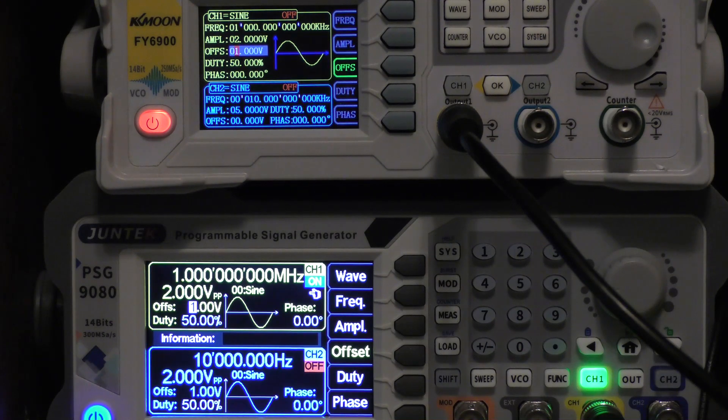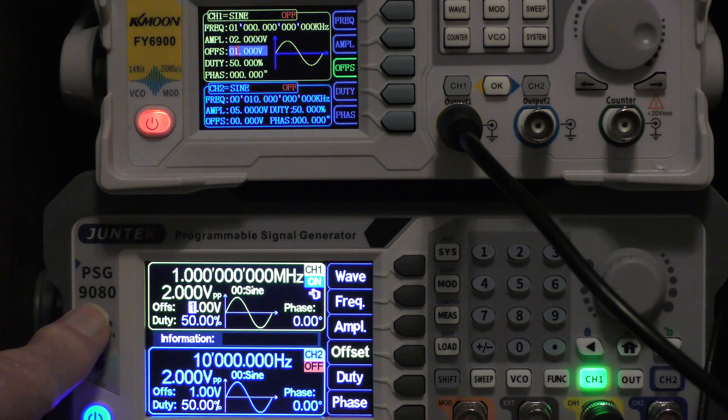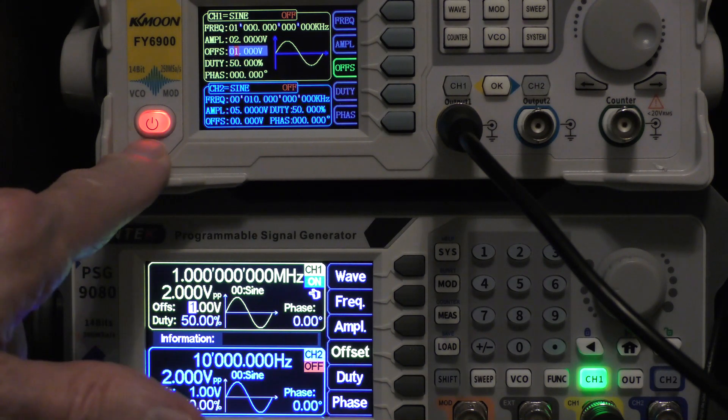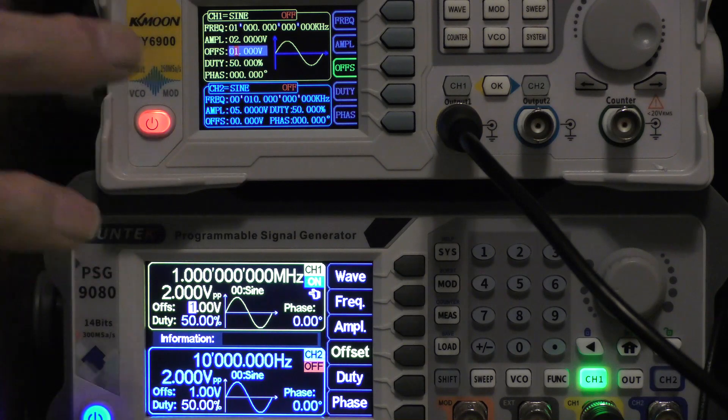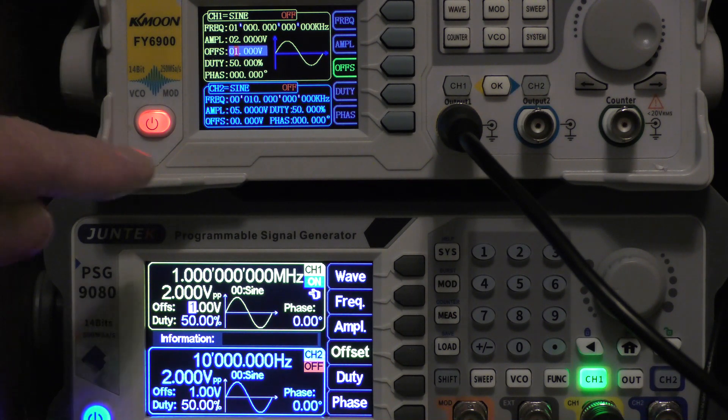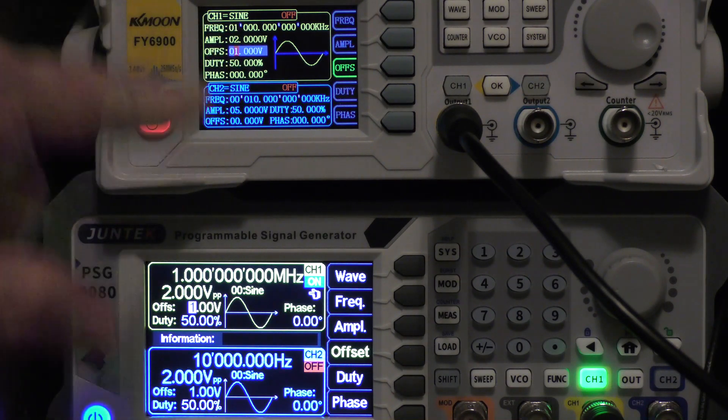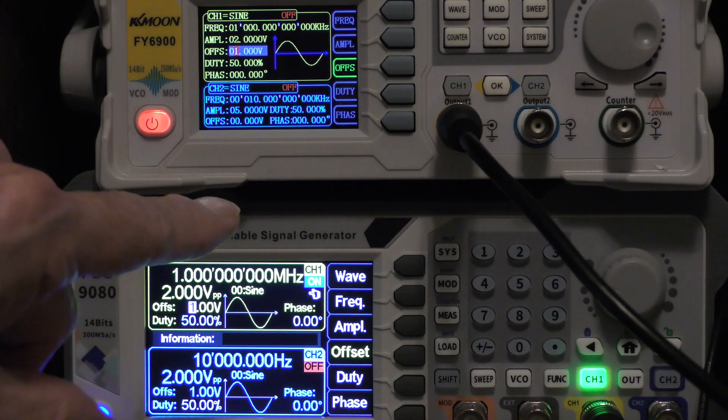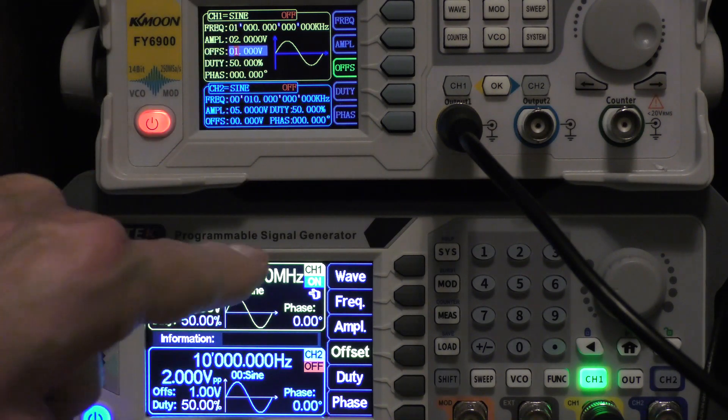A little bit more on these two generators, the Juntech PSG 9080 and the KK Moon FY6900. What I have discovered is that both generators only hold one offset value. So if you set an offset in one waveform, that same offset will be present in all waveforms, including the DC outputs.